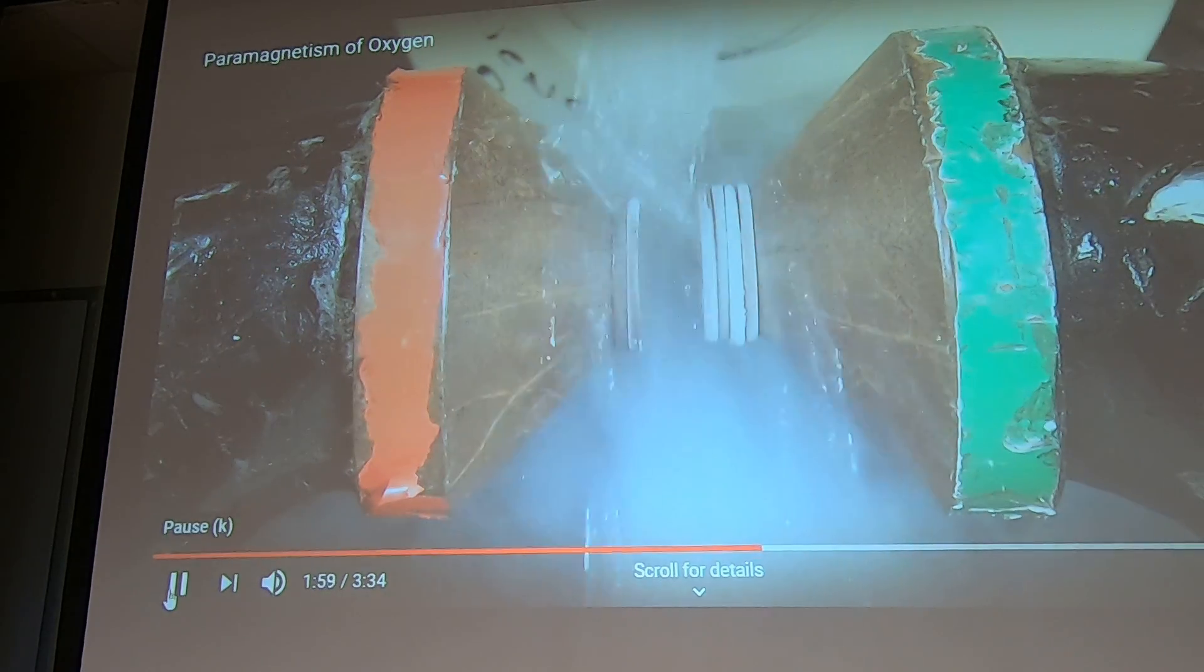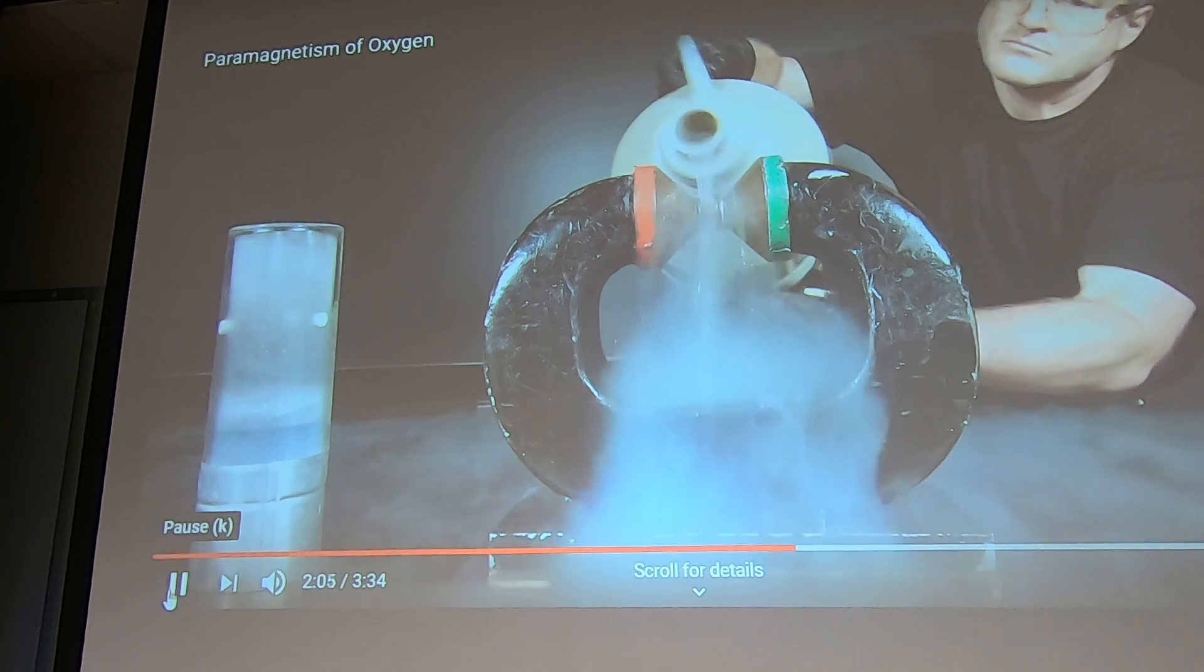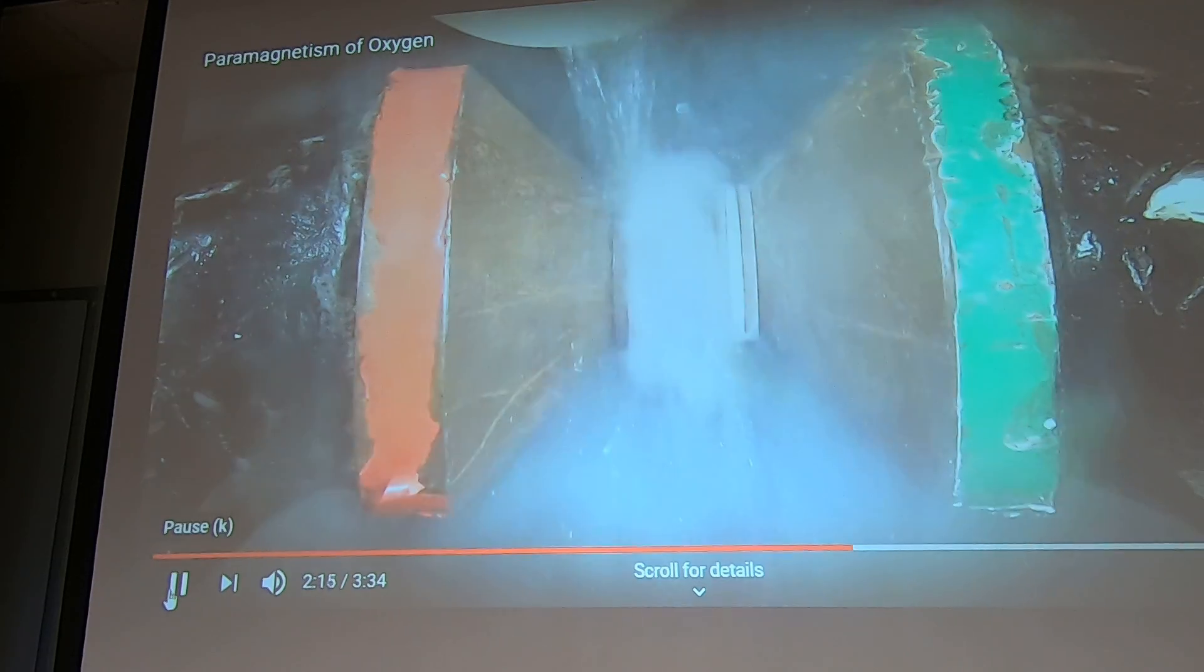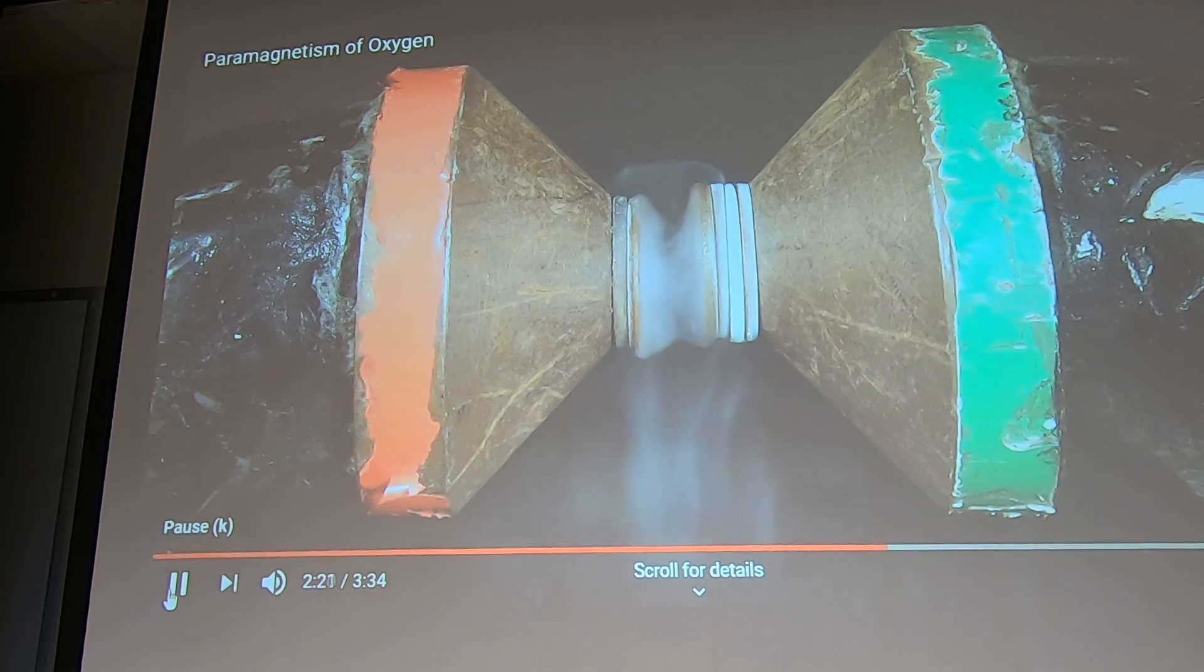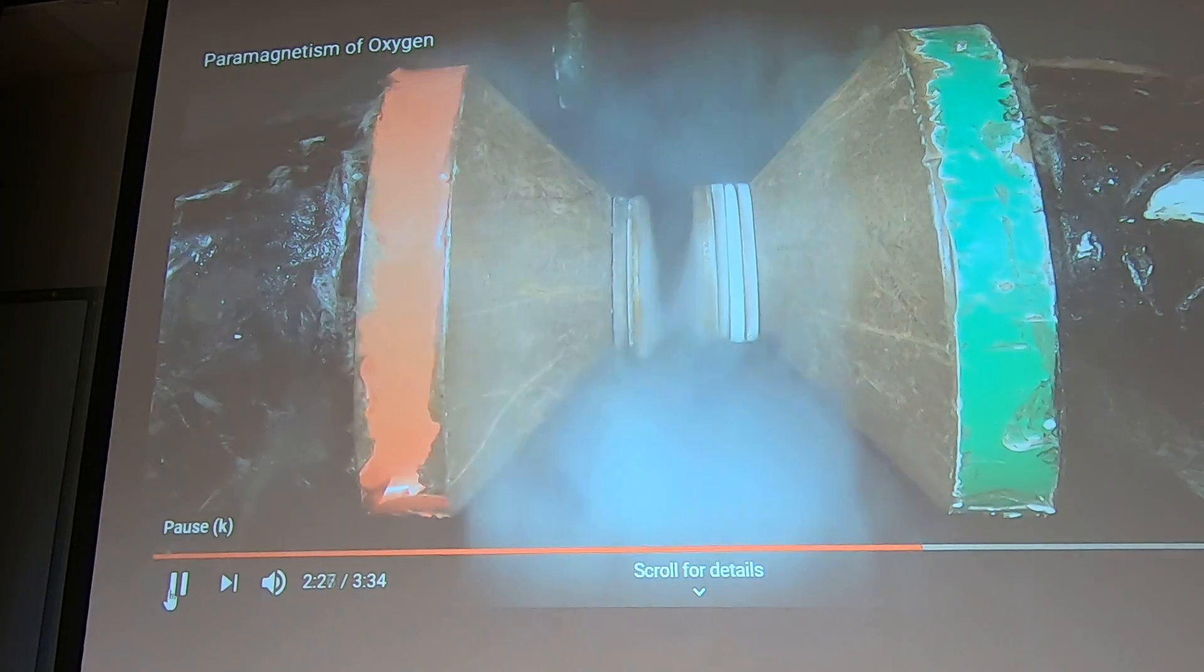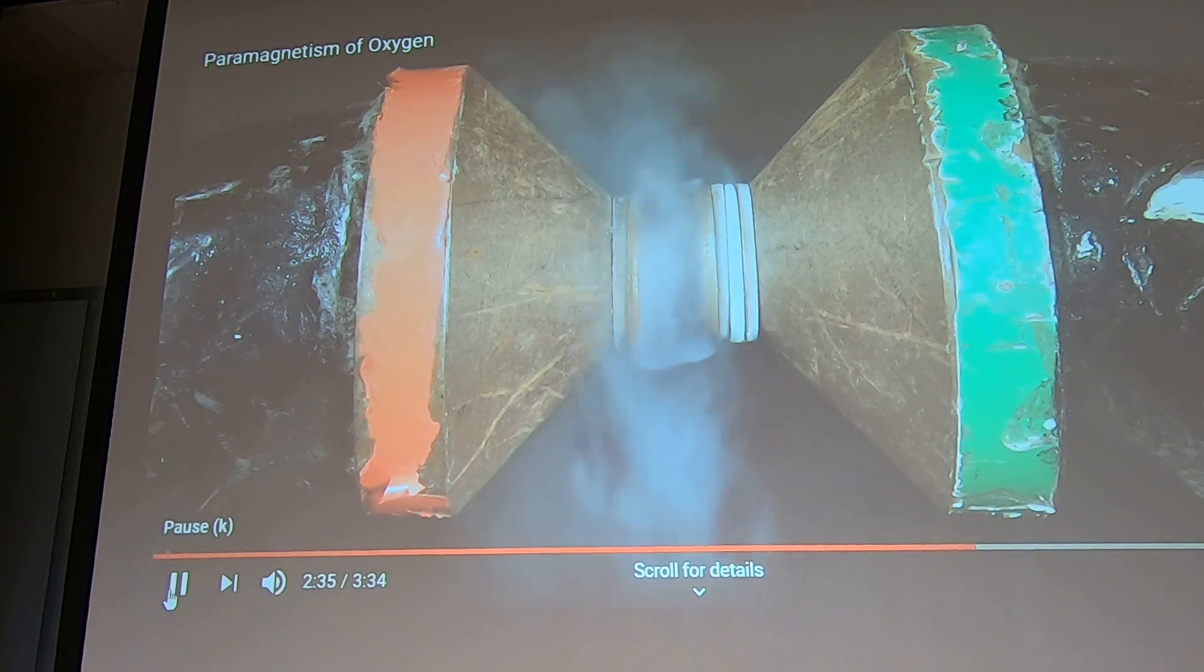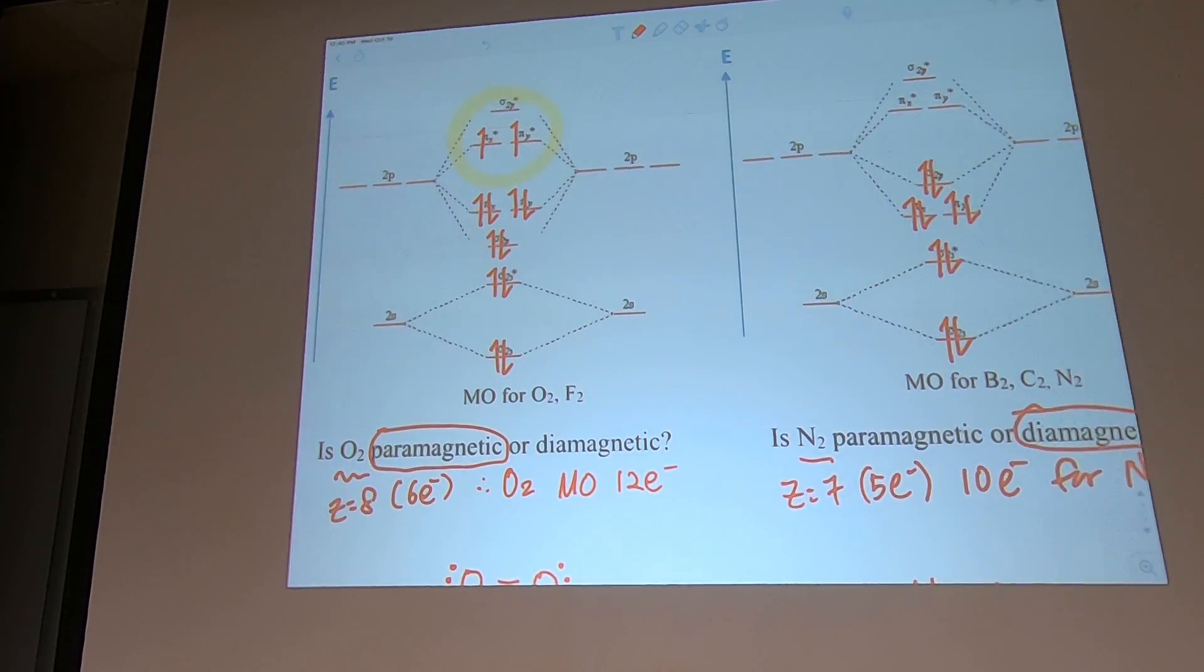You can see it stops right there - the little magnets are trying to align. This is liquid oxygen located between two magnets. This is an example of paramagnetic behavior. Molecular orbital theory nicely explains it. This is paramagnetic because of the molecular orbital theory.